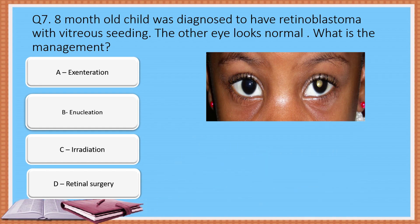Question 7: An 8-month-old child was diagnosed to have retinoblastoma with vitreous seeding. The other eye looks normal. What is the management? Option A: Exenteration. Option B: Enucleation. Option C: Irradiation. Option D: Retinal surgery.